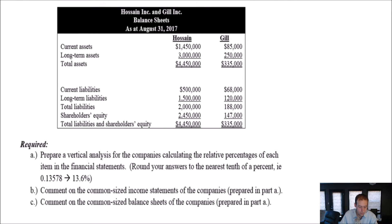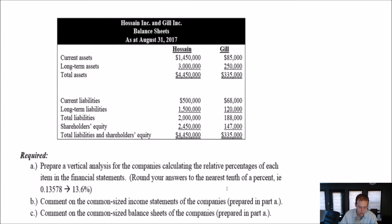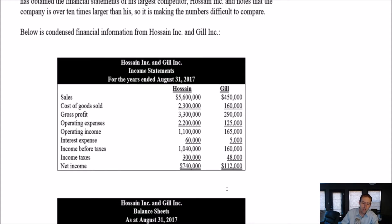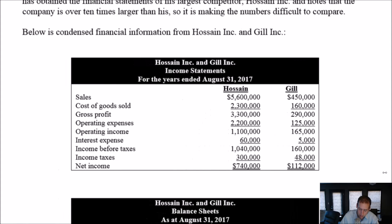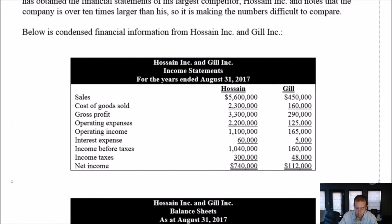It says: prepare a vertical analysis for the companies, calculating the relative percentage of each item in the financial statements. Comment on the common-sized income statements and comment on the common-sized balance sheets. So what we're going to do — I'll do Hossein's first, in blue ink. I'm going to list all of Hossein Inc.'s items and give myself a little more room.